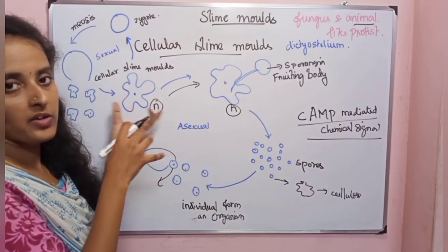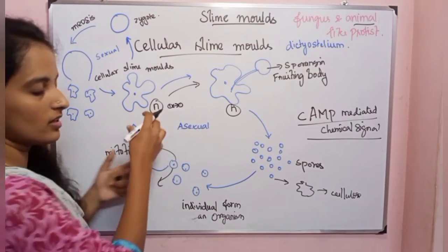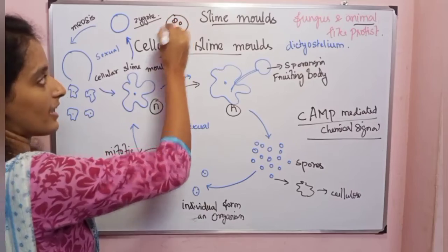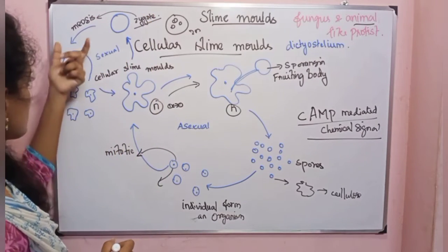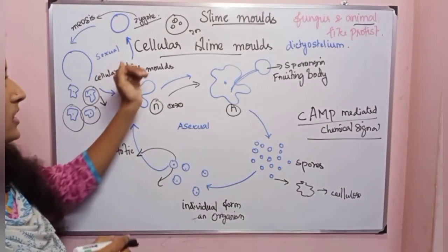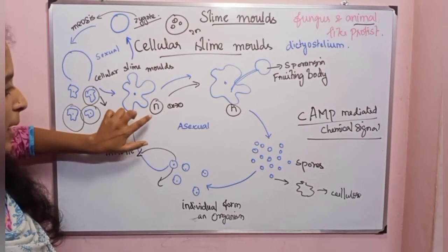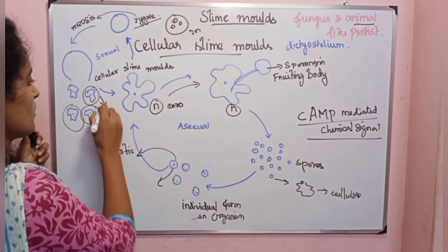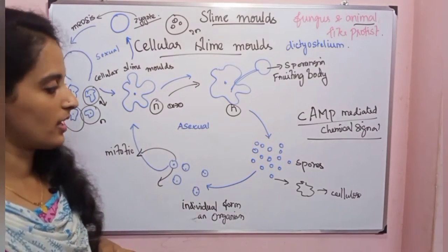In sexual reproduction of cellular slime molds, spores fuse to form a zygote. The zygote undergoes meiosis to produce haploid individuals. This is how sexual reproduction occurs in cellular slime molds, producing haploid cells through fusion and meiosis.